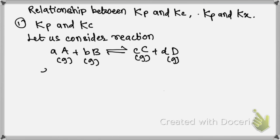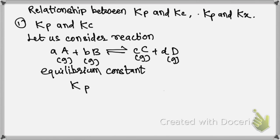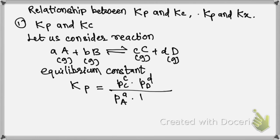The equilibrium constant for this reaction is Kp, which is given as Kp equals Pc to the power c, into Pd to the power d, divided by Pa to the power a, into Pb to the power b, at constant temperature.